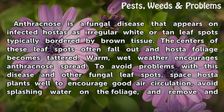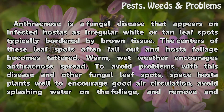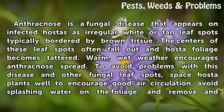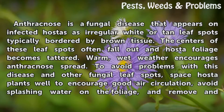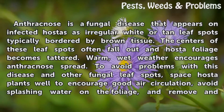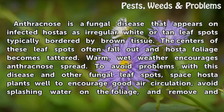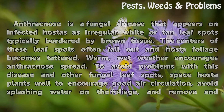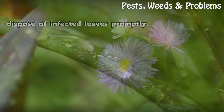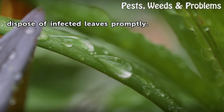Anthracnose is a fungal disease that appears on infected hostas as irregular white or tan leaf spots, typically bordered by brown tissue. The centers of these leaf spots often fall out and hosta foliage becomes tattered. Warm, wet weather encourages anthracnose spread. To avoid problems with this disease and other fungal leaf spots, space hosta plants well to encourage good air circulation, avoid splashing water on the foliage, and remove and dispose of infected leaves promptly.